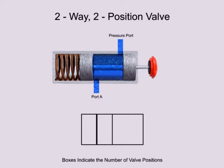For complex valves, the ports may also be labeled. The input port is typically labeled P for pressure. Outlet ports are typically given alpha characters starting with A. Other times, the letter stands for the destination of the fluid — for instance, the letter T would indicate a port connected to a tank. This is a fairly simple valve, so port labels are not required.